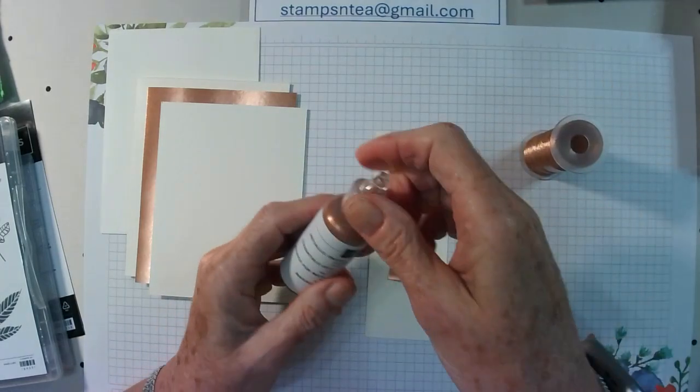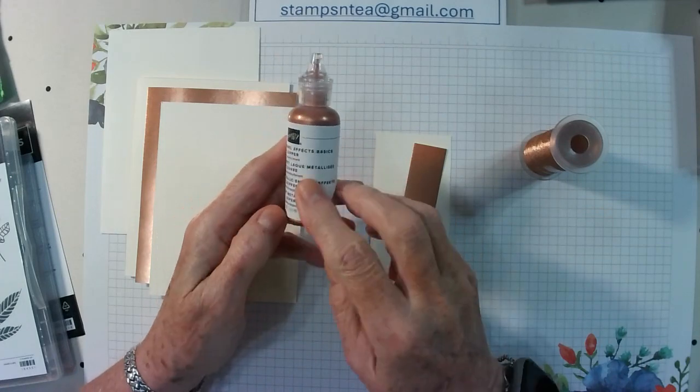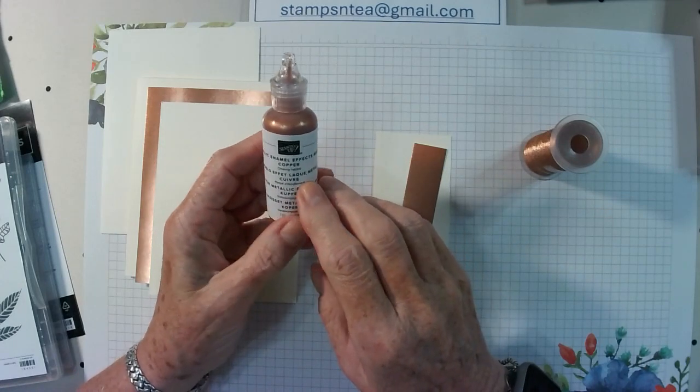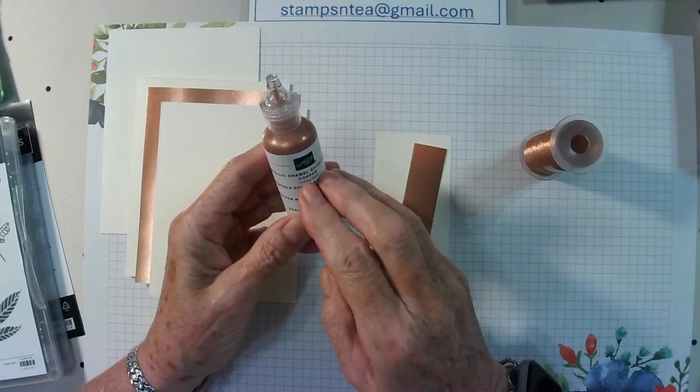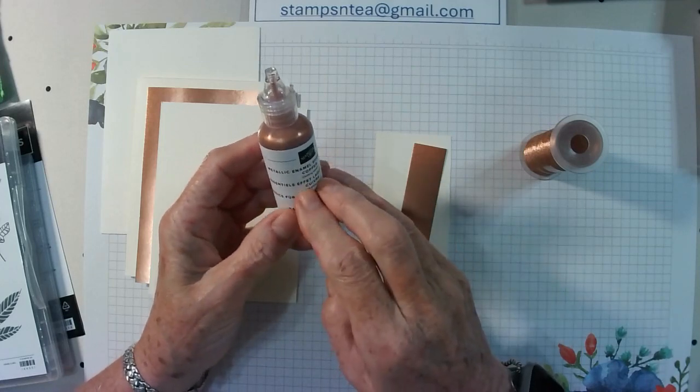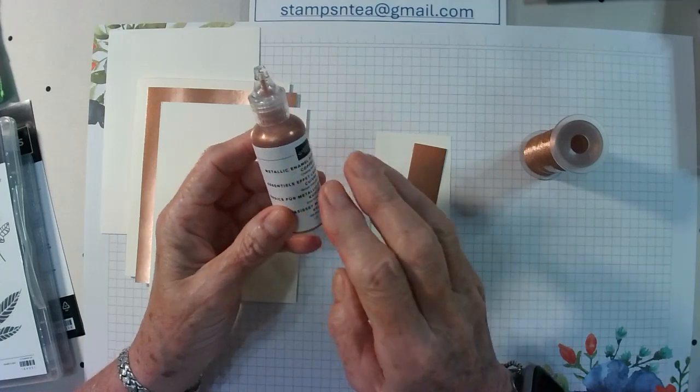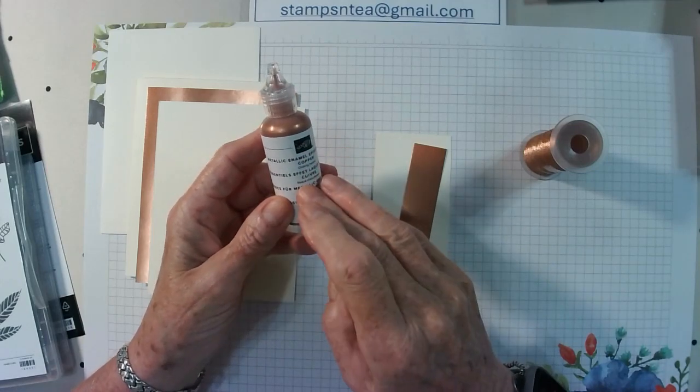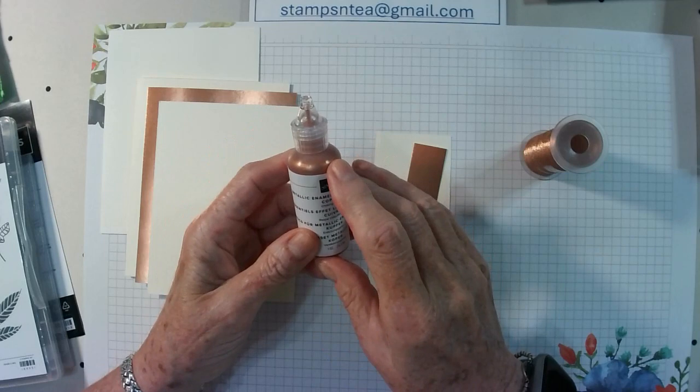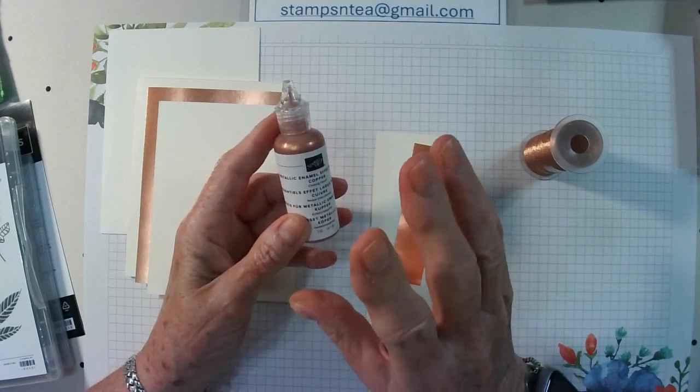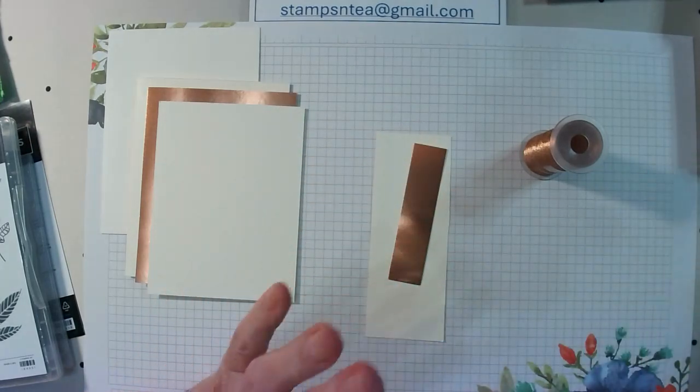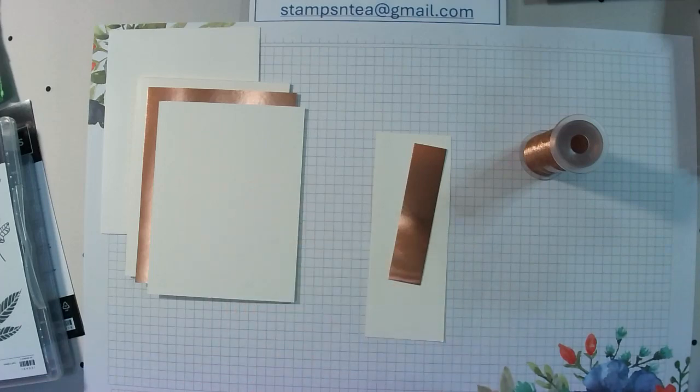We've also got some really really fine metallic twine. It's copper colored and I found it in the box. Probably had it for years and never used it but it's going to work well on this card. And we've got another new product which is called metallic enamel effects.